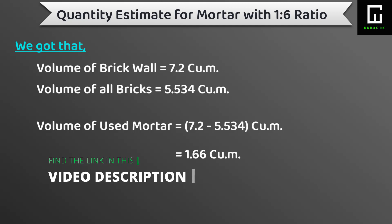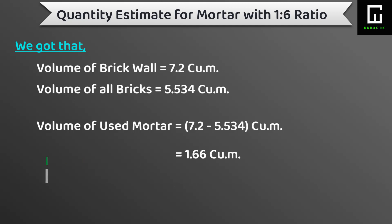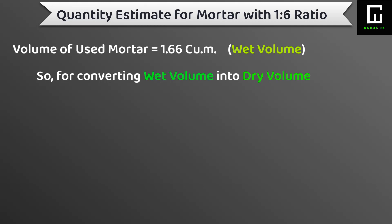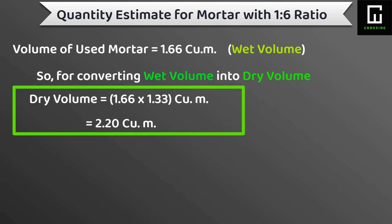If you want to learn the previous topic, the link has been provided in the description box. Now we have the mortar quantity as 1.66 m³. Remember this amount is the wet volume of mortar. For converting the wet volume to dry volume, we have to multiply by 1.33. After doing that we get the value as 2.20 m³, which is the dry volume of mortar.